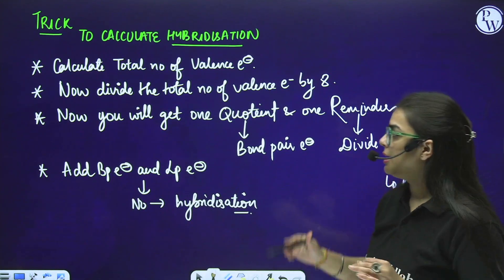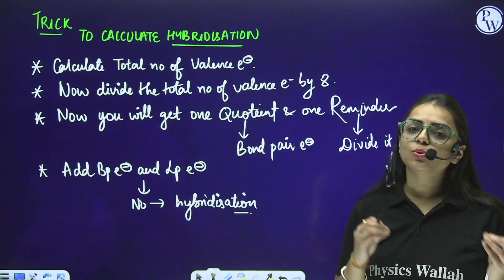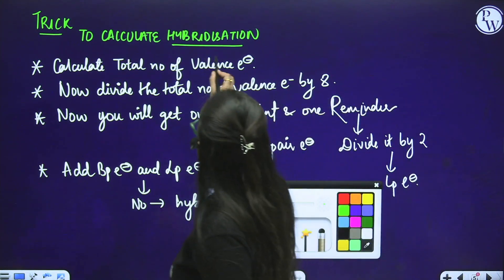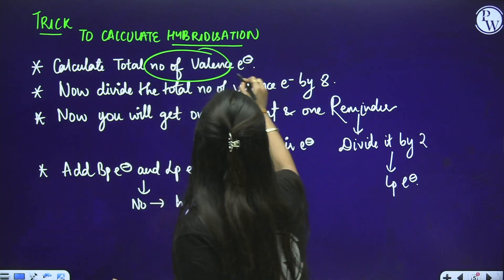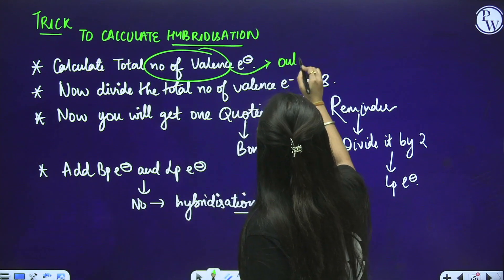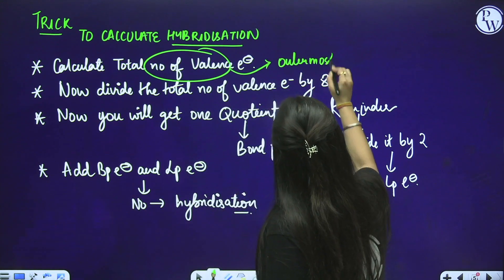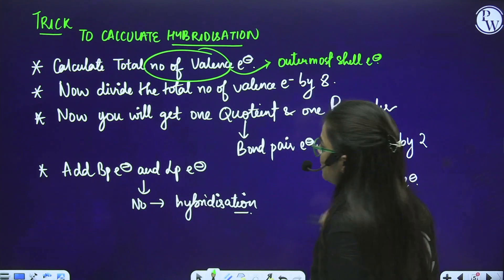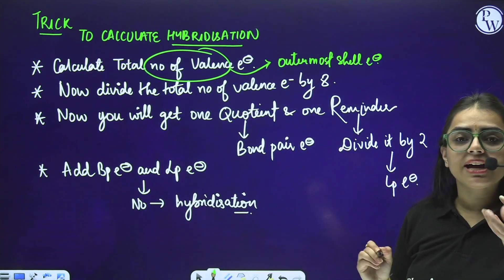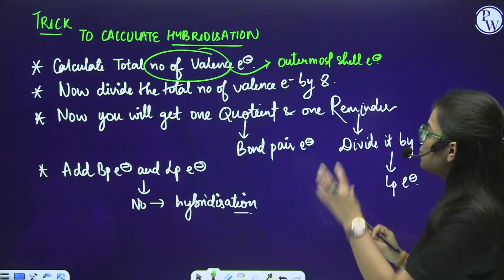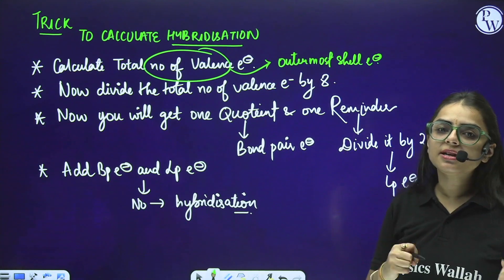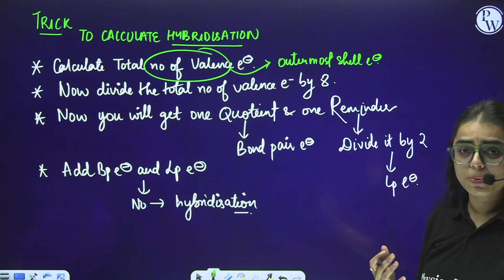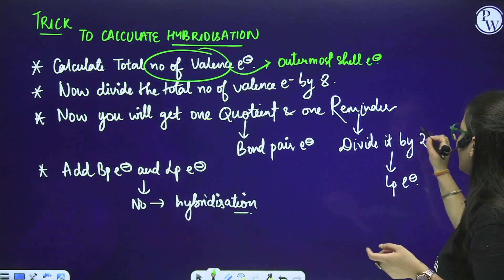The very first initial step is to calculate total number of valence electrons — these are basically the outermost shell electrons. Then divide by 8 to get one quotient and a remainder. The quotient is the bond pair electrons. The remainder divided by 2 gives the lone pair of electrons. By adding both values you get a number that determines hybridization.